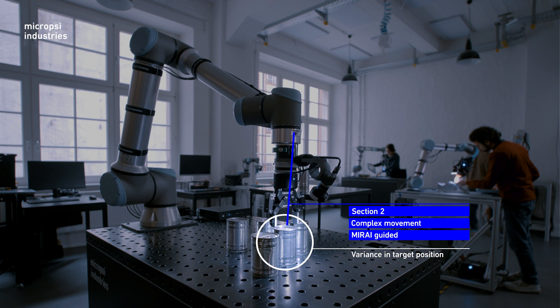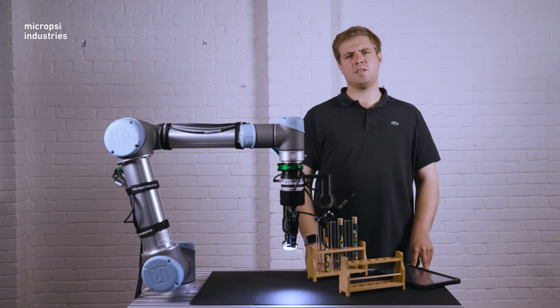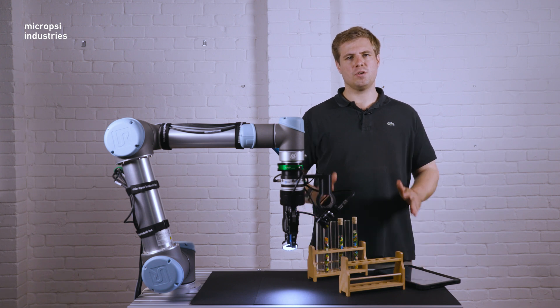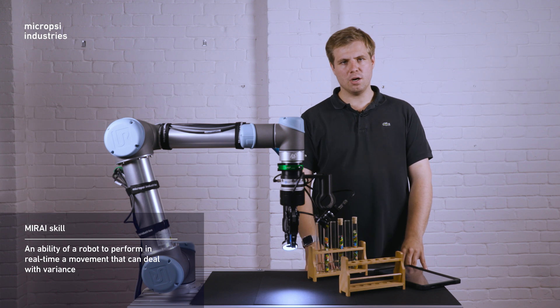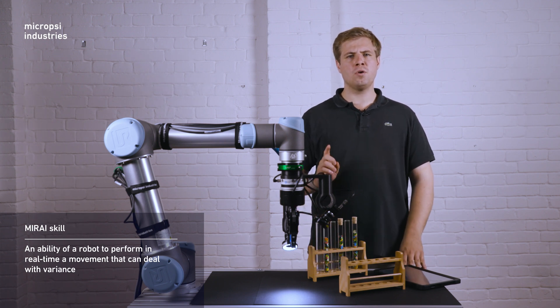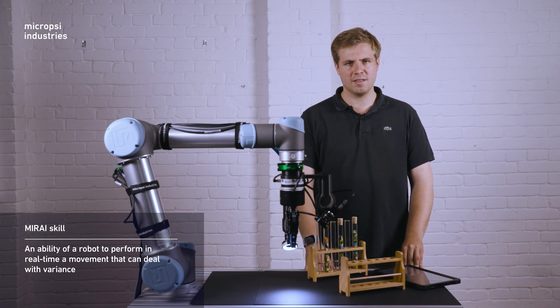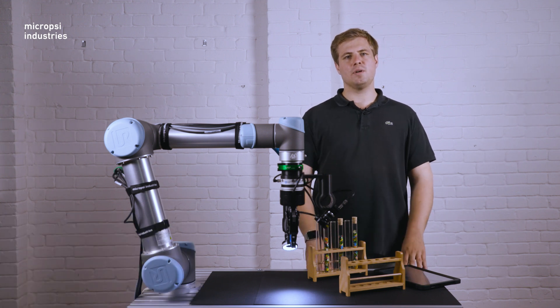The robot's native controller can't handle these complex sections. For each complex section in a task, we train a Mirai skill. A Mirai skill is an ability of a robot to perform in real time a movement that can deal with variants. A skill is enabled through human demonstrated training.